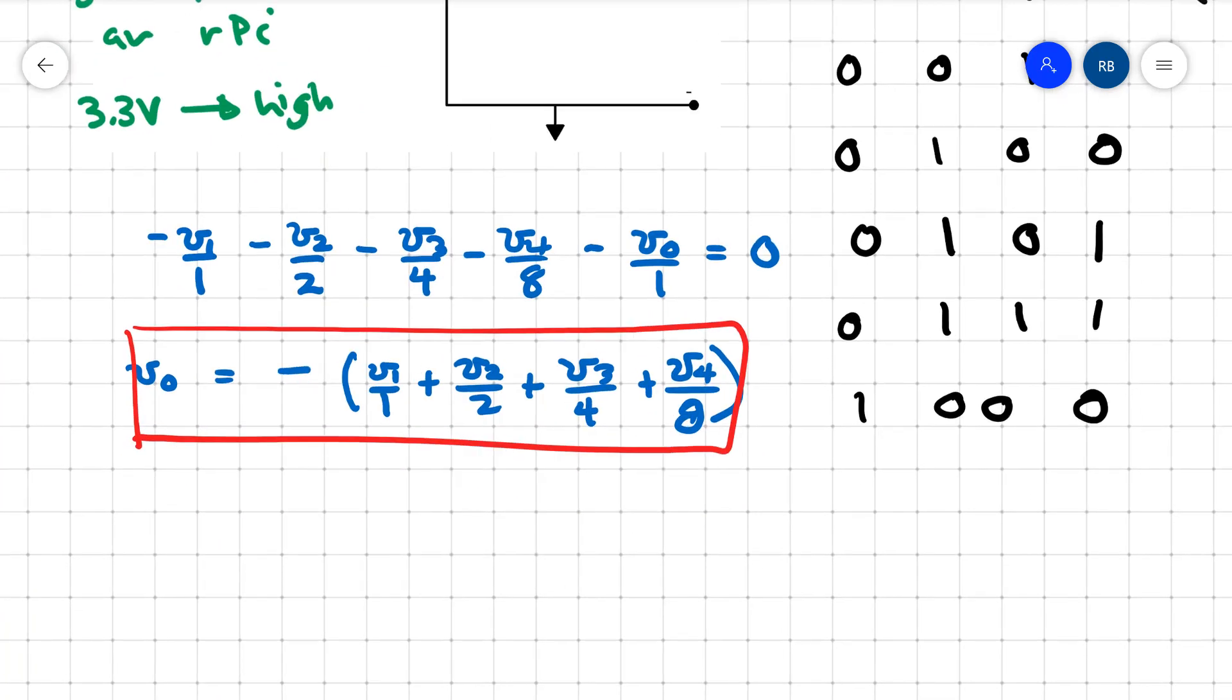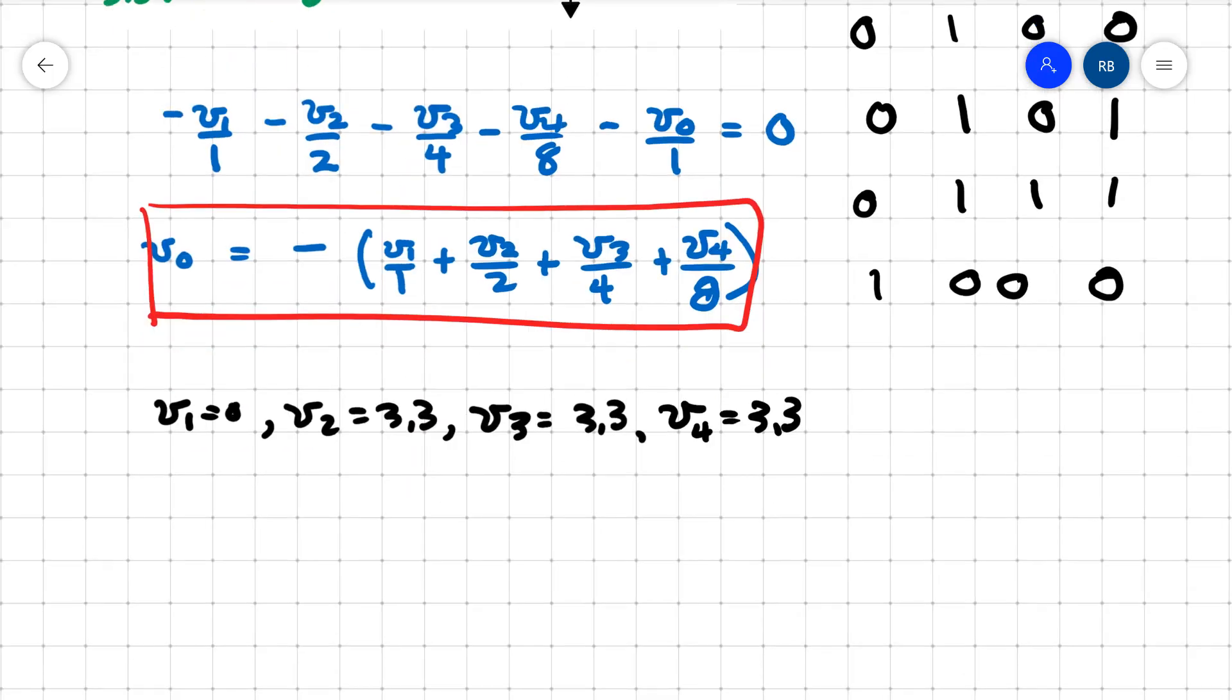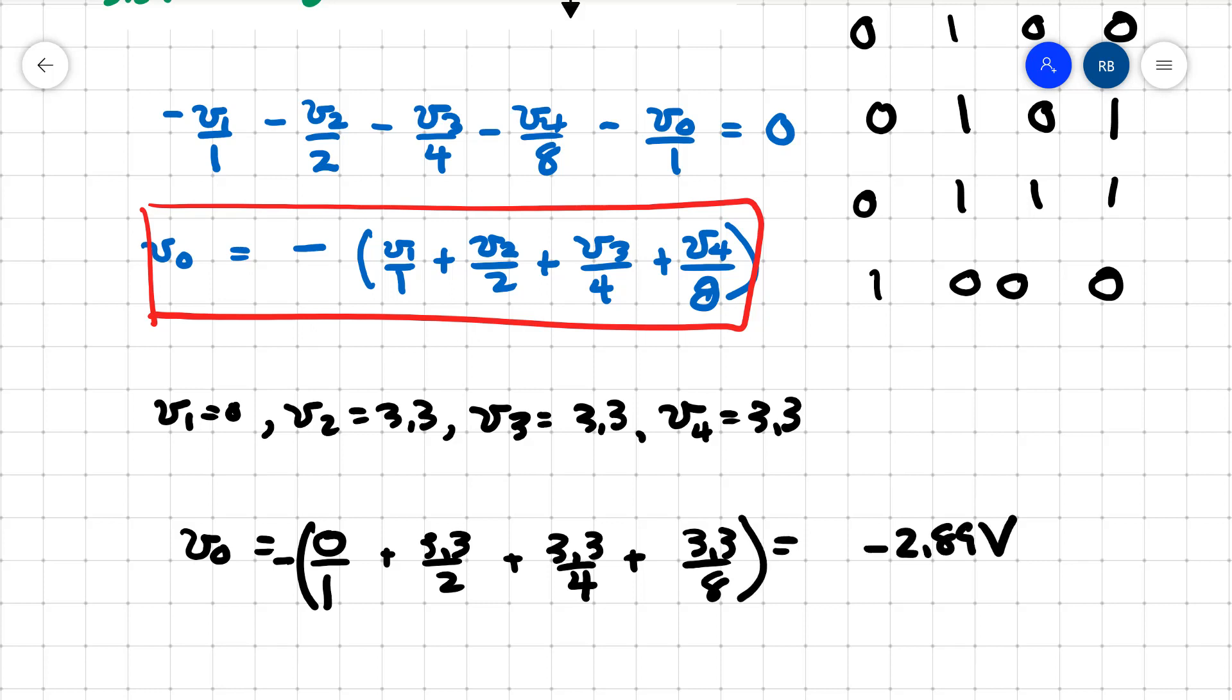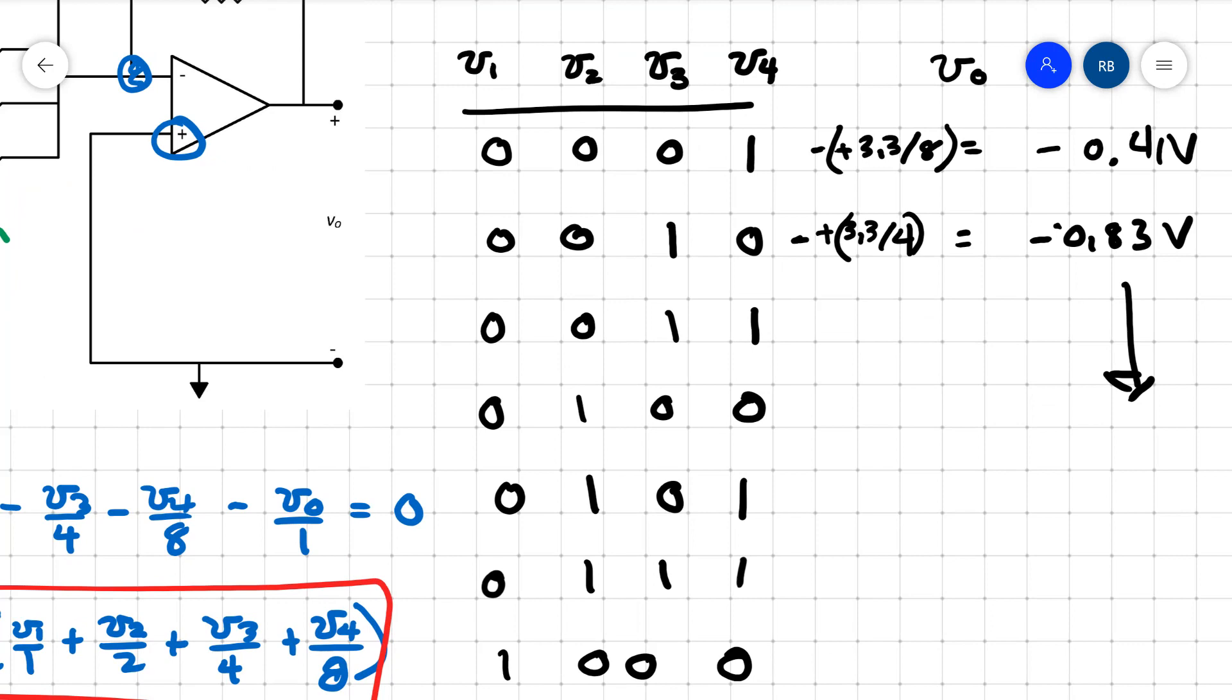Another example along the same lines would be if I had V1 equal to 0, V2 equal to 3.3, V3 equal to 3.3, and V4 equal to 3.3. What would be my output voltage coming out of my op amp? I would find that V0 equals negative 0 over 1 plus 3.3 over 2 plus 3.3 over 4 plus 3.3 over 8, and that's going to be equal to negative 2.89 volts. By using my digital binary conversion, I can convert to an analog voltage out.